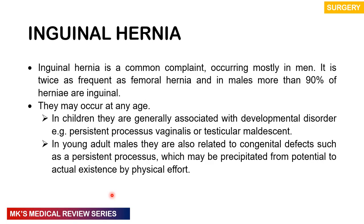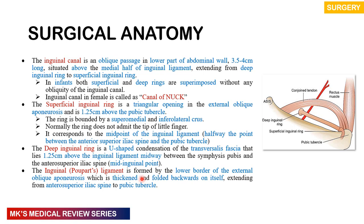Inguinal hernia is the most common type of hernia, most occurring in men — 90% of inguinal hernias occur in males, and it is twice as frequent as femoral hernias. They can occur at any age: in children they are associated with developmental disorders like persistent processus vaginalis or testicular maldescent; in young adult males they are related to congenital defects such as persistent processus or precipitating factors increasing intra-abdominal pressure. In females the inguinal canal may go by the name of the canal of Nuck.